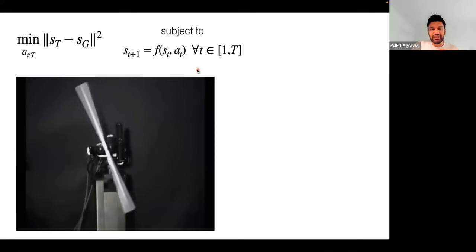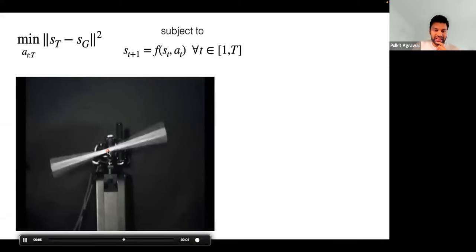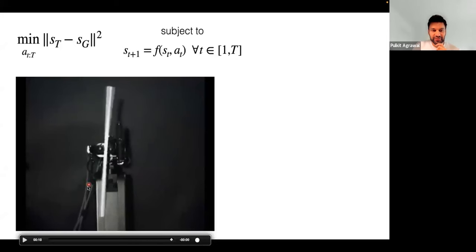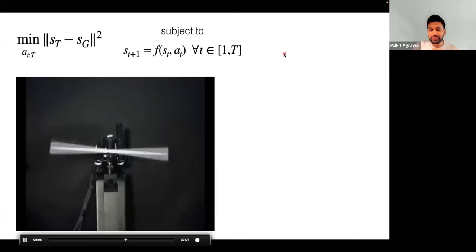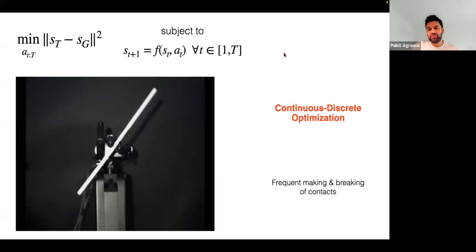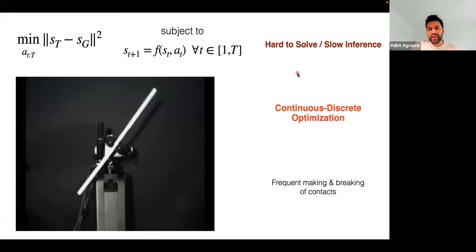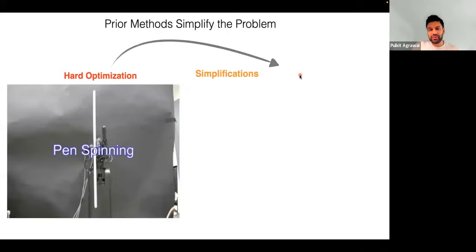Many people have attempted this. Here's a demo from a Japanese lab from the late 1990s and early 2000s where fingers make and break contact with an object. This frequent making and breaking of contact means we are solving a continuous-discrete optimization problem — these problems are NP-hard, meaning finding solutions in real time or even finding good solutions can be very difficult.